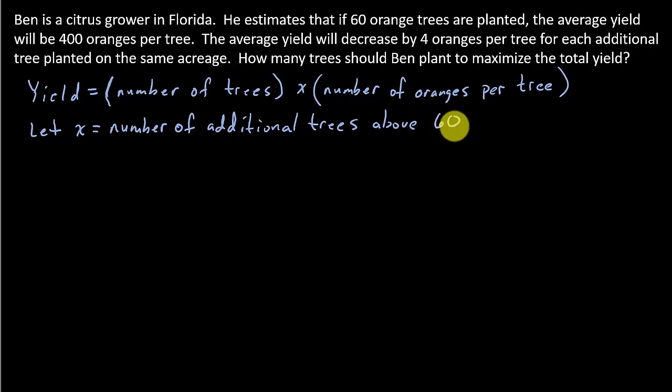Because, you see, it tells us he estimates that if 60 orange trees are planted, so there's already 60 there, and we're going to add more trees to that 60. So that's what we're going to let x equal, each additional tree.